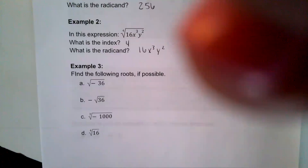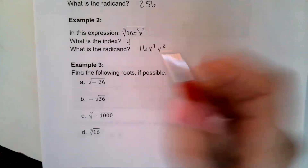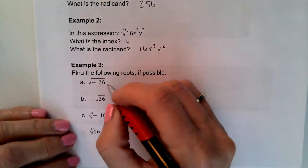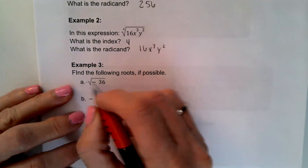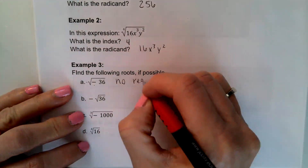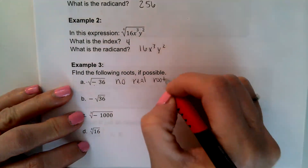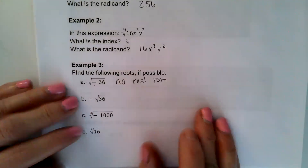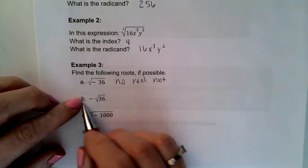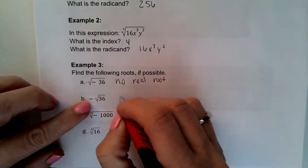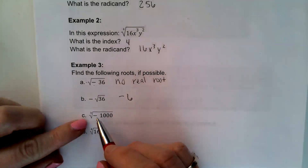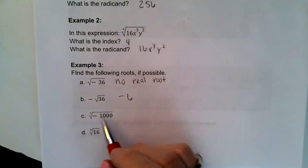Find the following roots if possible. The first one — we can't take it because it's an even root of a negative number, so there's no real root. We're going to learn about imaginary numbers later. Then the negative of the square root of 36 is just negative 6. And the cube root of negative 1,000: